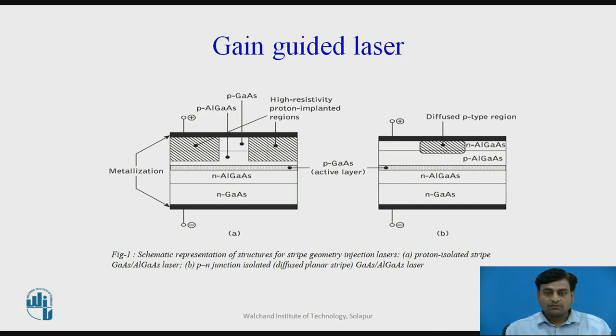The contraction of the current flow to the strip is realized in the structure either by implanting the regions outside the strip with protons to make them highly resistive, or by oxide or p-n junction isolation.